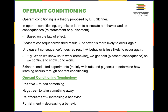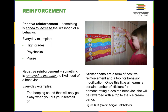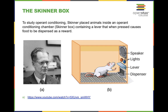Operant conditioning is based on the law of effect, which states we tend to engage in behaviors that elicit a positive or enjoyable consequence, and are less likely to engage in behaviors that elicit an unpleasant or neutral consequence. B.F. Skinner created the Skinner box, which demonstrated that when you put a rat in a chamber with a lever, whenever they pull the lever it dispenses a reward — they engage in a behavior that elicits a pleasant consequence. This is positive reinforcement.